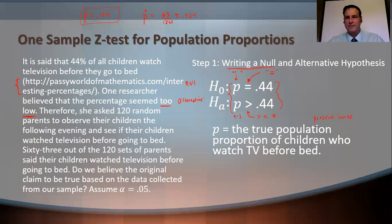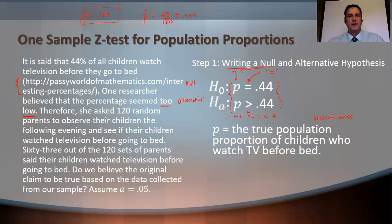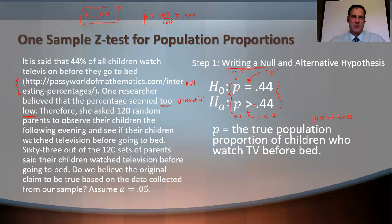That is step one. In 9.2, both the null and alternative will use plain P's — no hats. Always write H₀ and H_A out front. Write an equal to sign for the null, and an inequality for the alternative. The numbers in both must match. That's a population proportion, and the alternative uses the same number with an inequality.